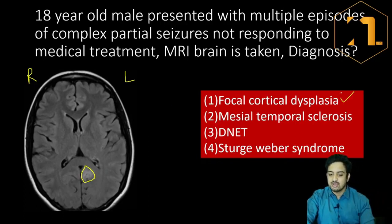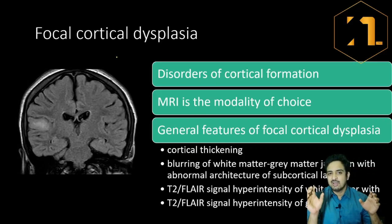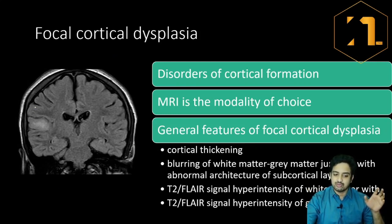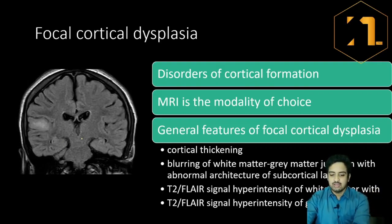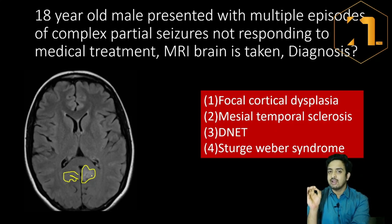Focal cortical dysplasia, as the name suggests, involves dysplasia of the cortex — it is a disorder of cortical formation. To investigate focal cortical dysplasia, MRI with T2 FLAIR coronal images is essential. What we see is cortical thickening in the affected region. Comparing the two sides, the normal cortex has its usual appearance, but the affected side shows thickened cortex with hyperintensity.